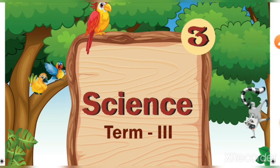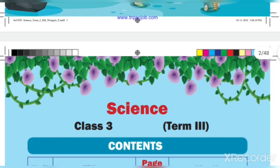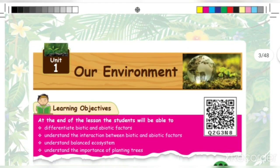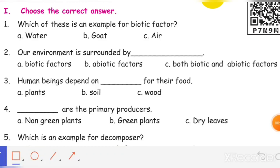Third Standard Science, Term 3, Unit 1: Our Environment. Evaluation Part 1. Choose the correct answer.